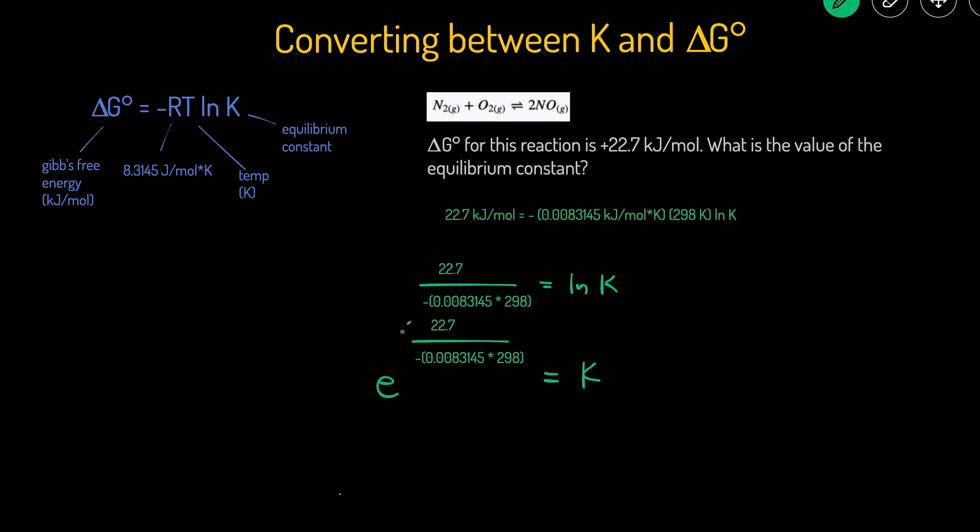When doing this in the calculator, put parentheses around the entire exponent. This comes out to 0.000105, or in scientific notation: 1.05 × 10⁻⁴.